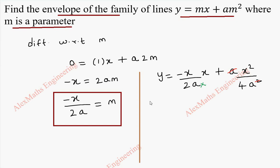So if I take 2 in the numerator and denominator here, the common denominator will become 4a. This becomes minus 2x² plus x².